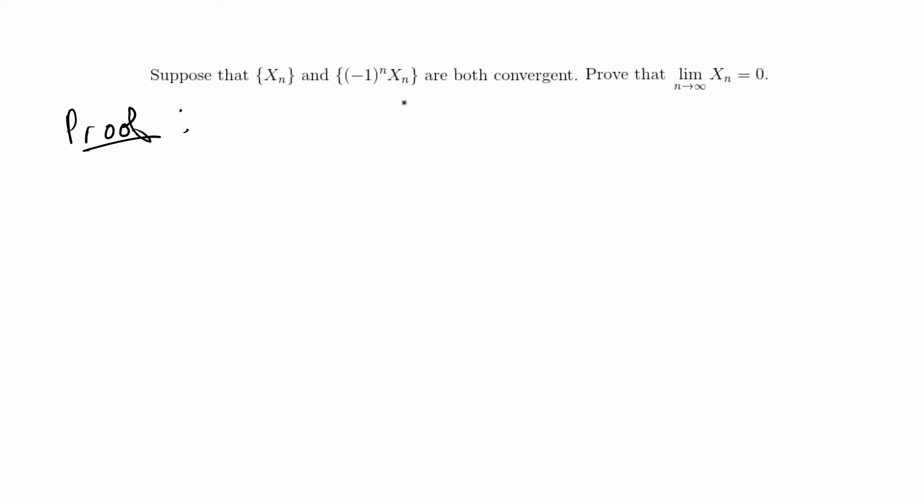It's a pretty short proof, but I think it's good at testing the basic real analysis properties or theorems involving sequences and limits. This proof says suppose that {X_n} and {(-1)^n X_n} are two convergent sequences. Prove that the limit of X_n is equal to zero.